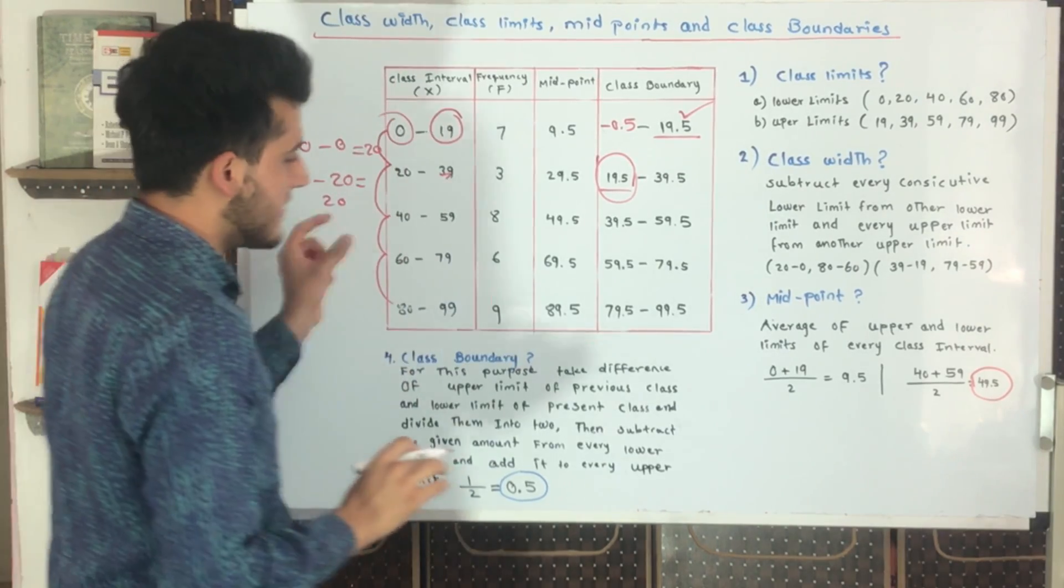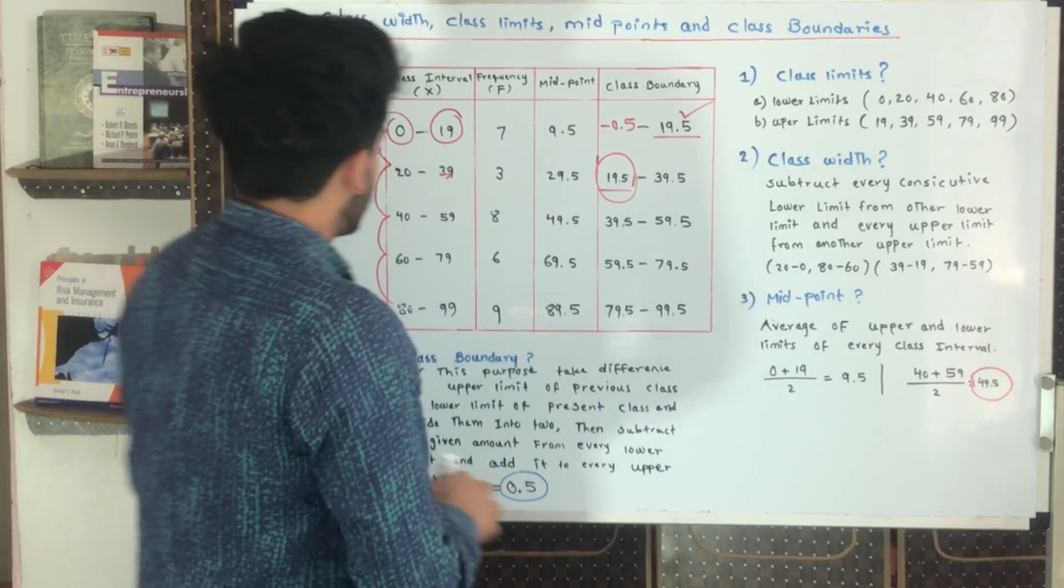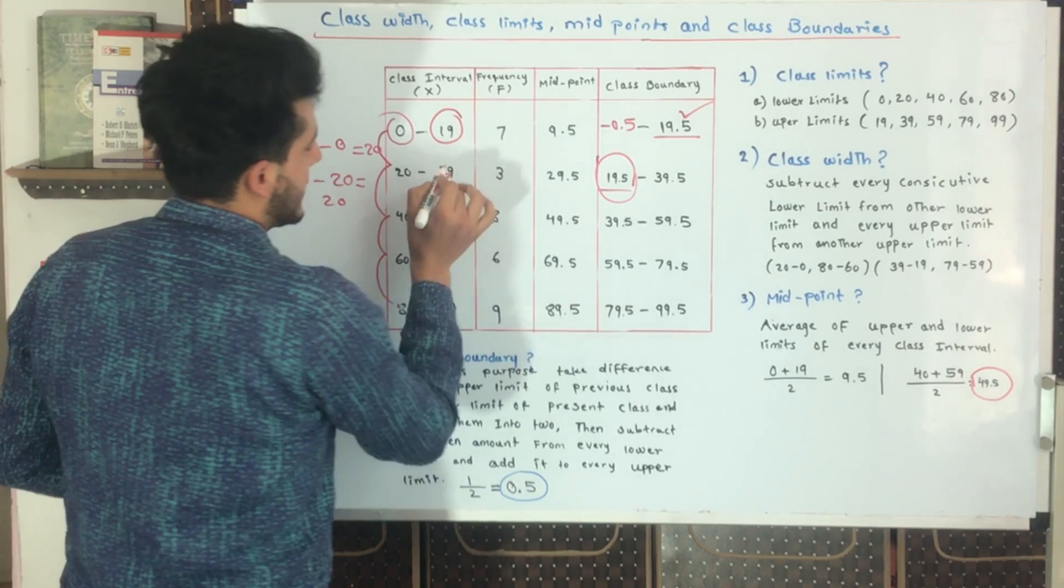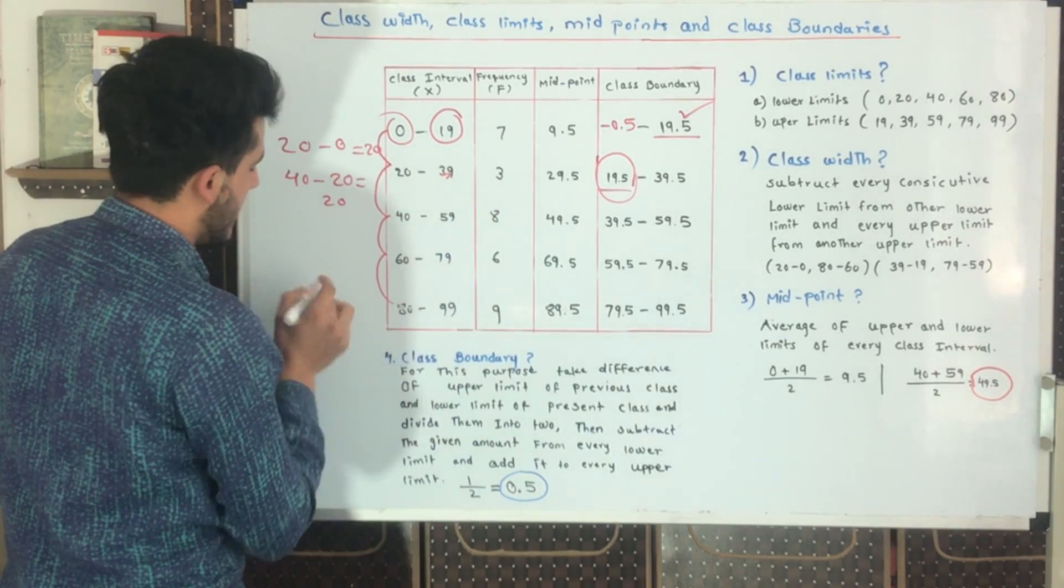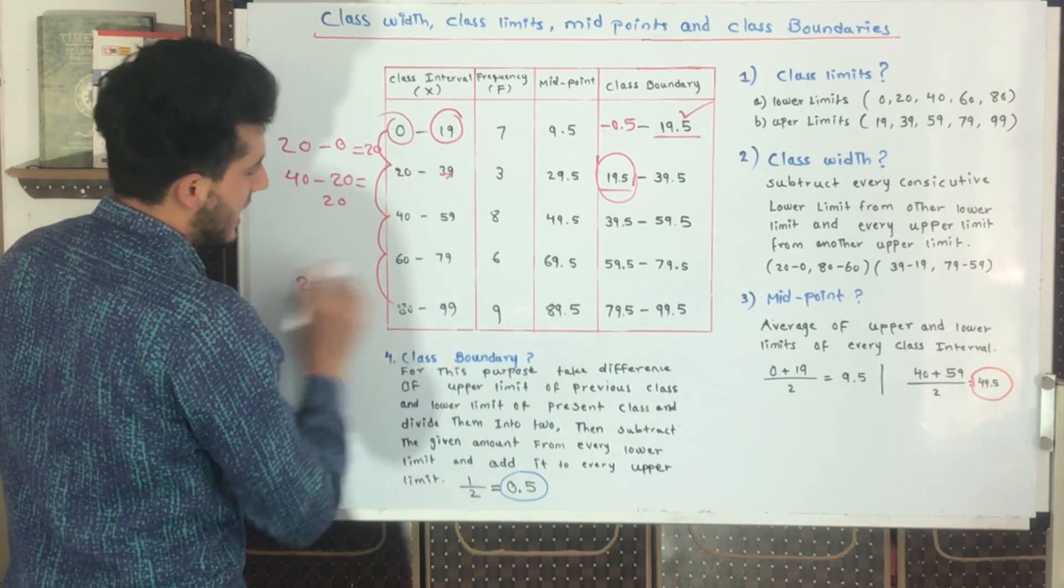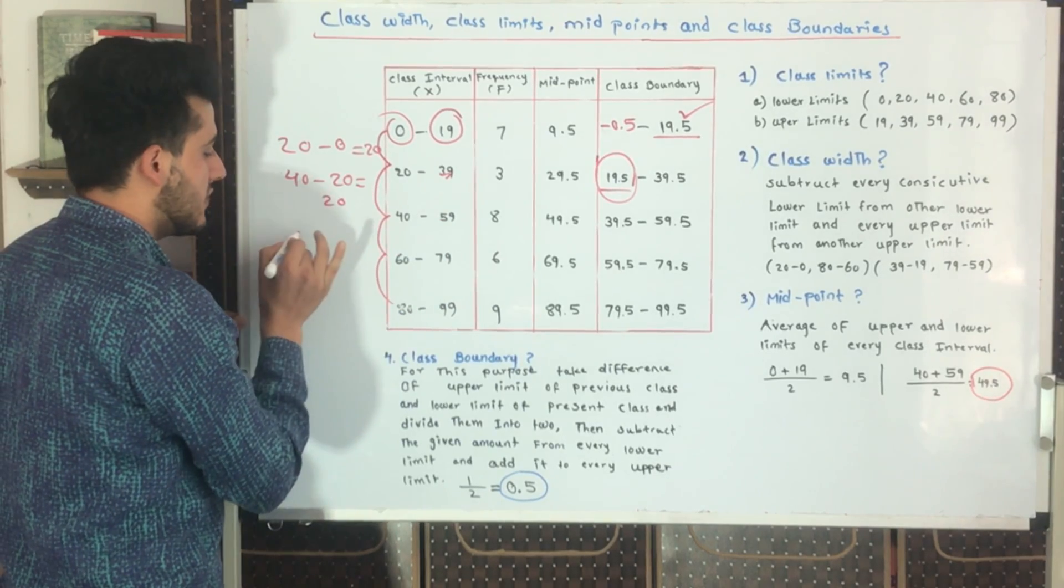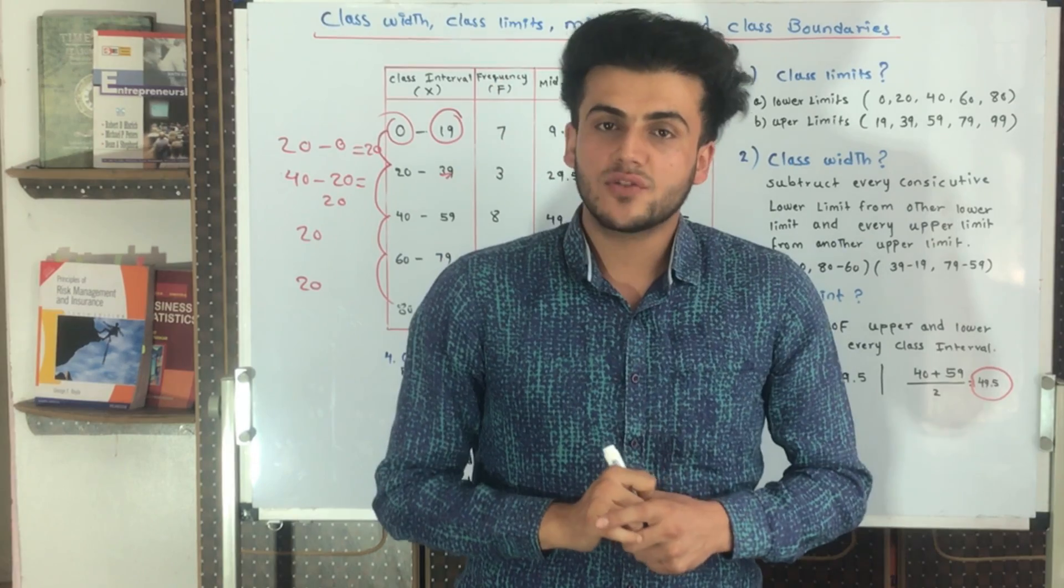On the other hand, if we take it vertically with these upper limits 19, 39, 59, 79, 99 - if we subtract 79 from 99, the result would be 20. If we subtract 59 from 79, it will also be 20. I hope it's all understandable and you're getting the logic.